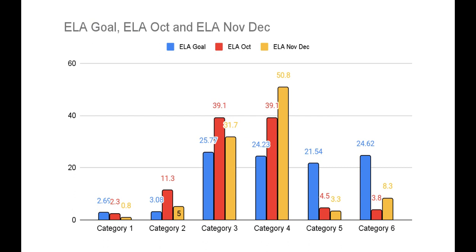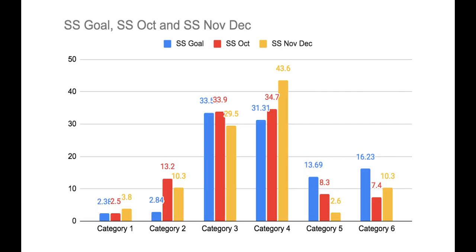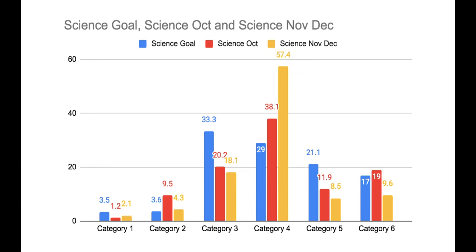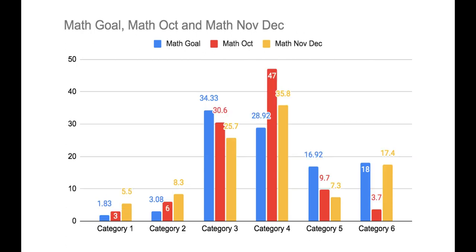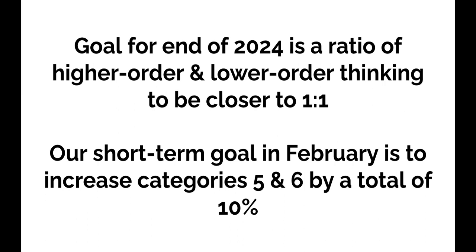Each core content area determined at our last professional development where they would like to see our numbers move to, as highlighted in blue. For example, ELA would like to see categories 3 and 4 reduced; however, they would like to see their categories 5 and 6 improved. Each core content area moving along our path goes from social studies to science. We want to see our yellows move to blues — our yellow was our last data cycle, and our blue represents the goals that our teacher staff recommended. Our goal for the end of 2024 is for the ratio of higher-order to lower-order thinking to be closer to a 1-to-1 ratio, meaning categories 3 and 4 are close to our categories 5 and 6.